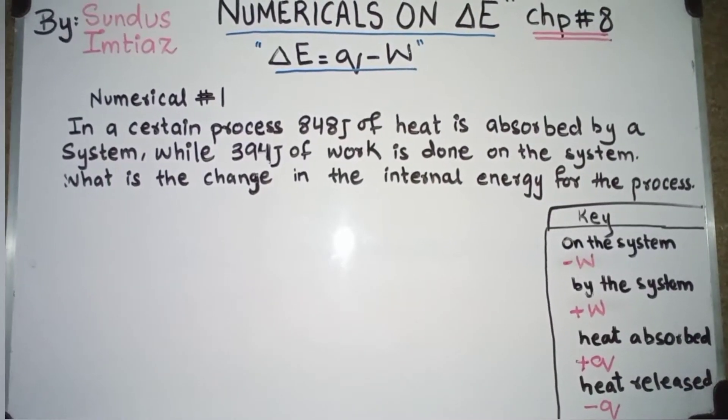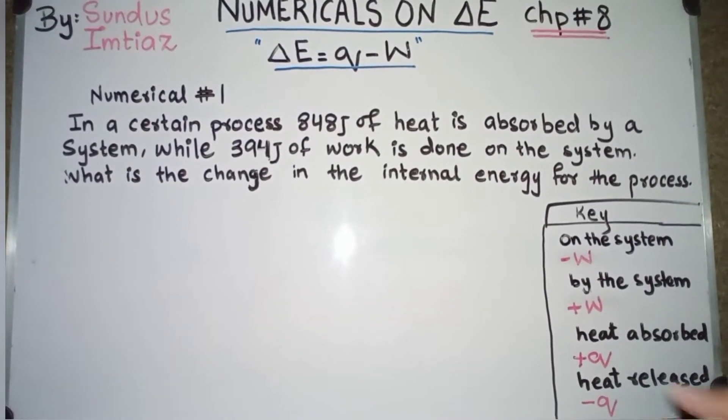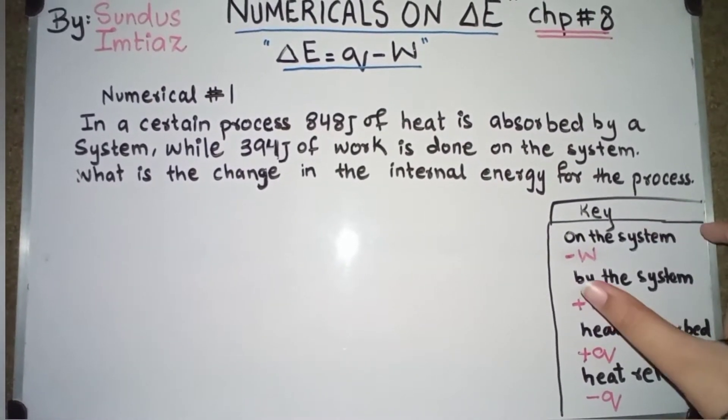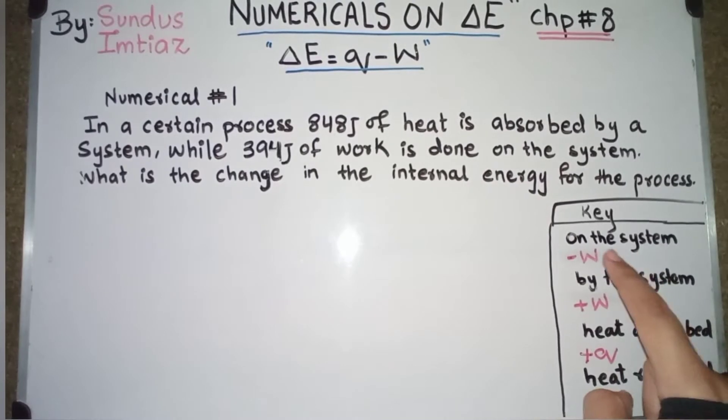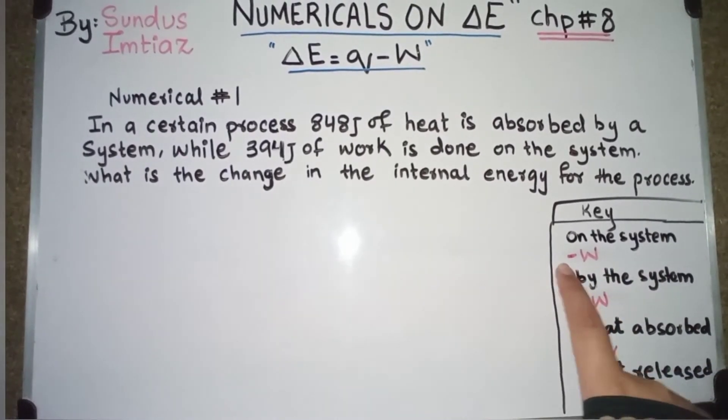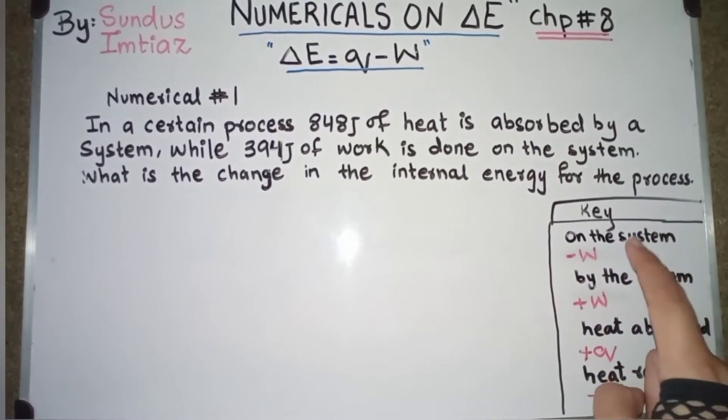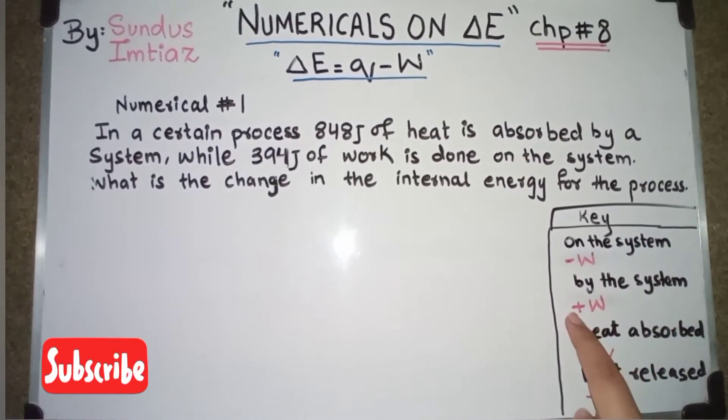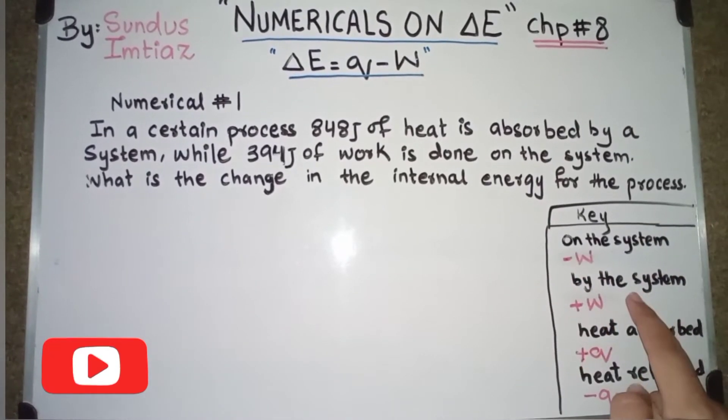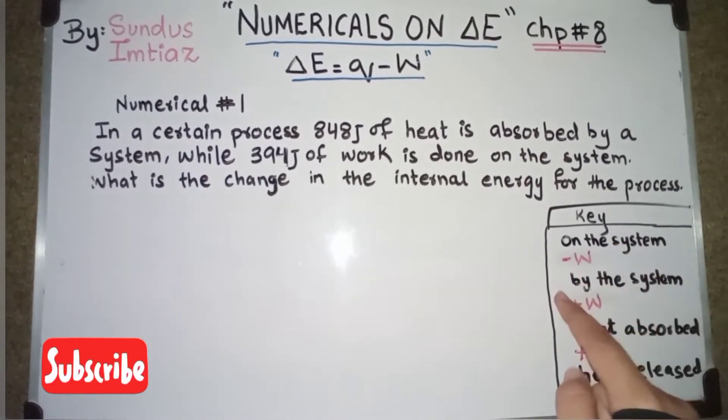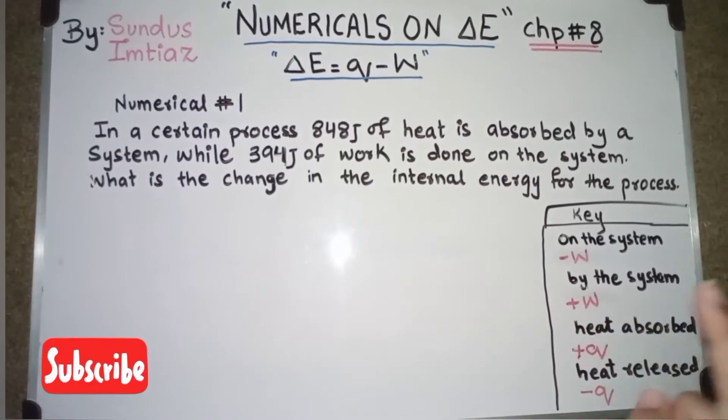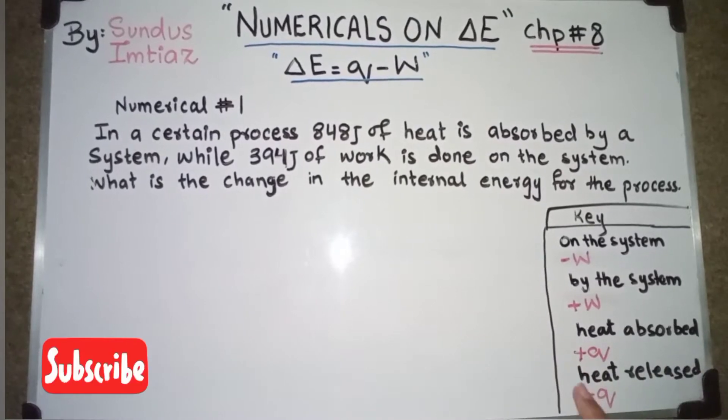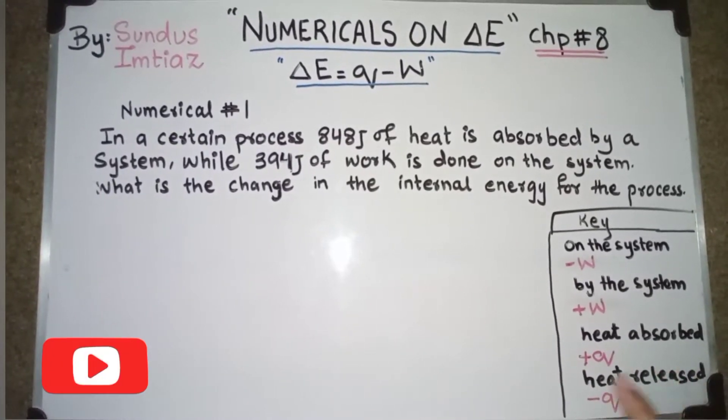So when we solve any numerical, first of all we should know its key. I have made a small key for you. It tells you that work is negative at that time when work is done on the system. And work will be positive by the system, means system is working. And heat absorbed, it means Q is positive. Heat released, it means Q is negative.